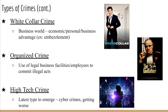Organized crime is the use of legal businesses or employees to commit illegal acts — typically money laundering, like the mafia having a front business. The sixth and last type of crime is high tech crime. This is the latest to emerge — crimes on the internet that are getting worse all the time. In fact, the next world war is forecasted to be a war in cyberspace, and there are very few protections for people online.